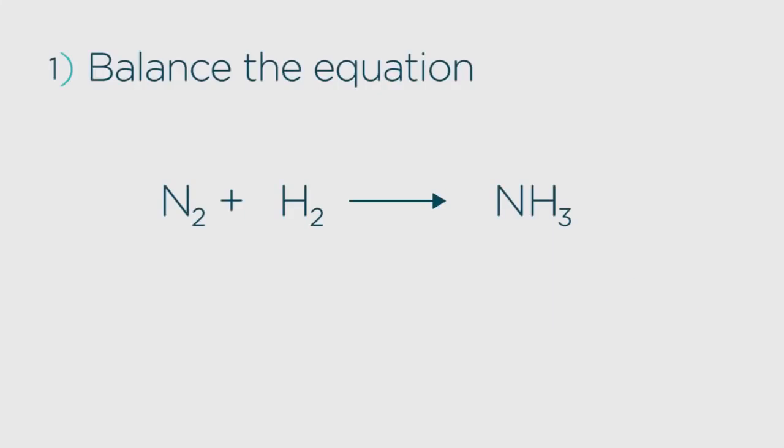Well, the answer is, for every two moles of ammonia, we need one mole of nitrogen gas and three moles of hydrogen. If you worked it out as one mole of ammonia needs half a mole of hydrogen and three over two moles of nitrogen, that's quite right too.